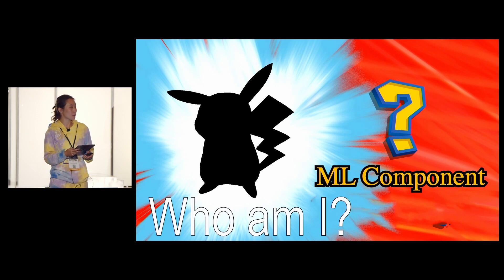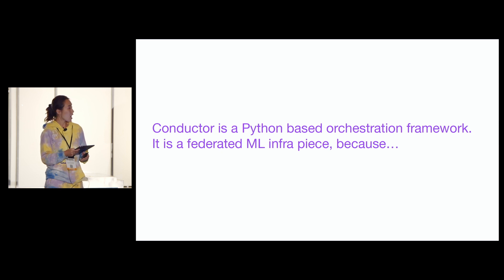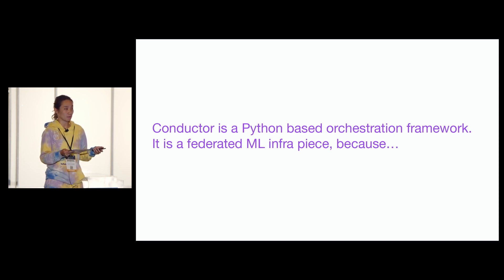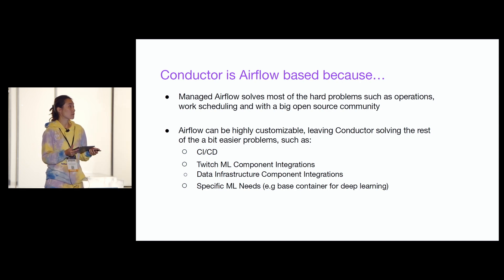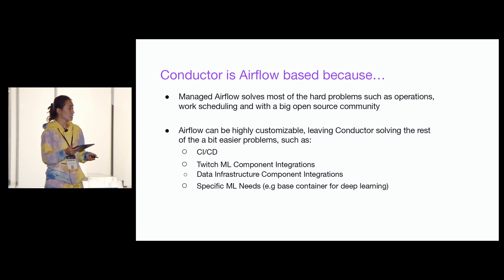That missing component is Conductor. There are two reasons why Conductor is a federated ML piece: no single ML infrastructure team owns a Conductor cluster to be shared — Conductor is more like a Python library or framework that every team builds in their own copy and maintains. And why Conductor is based on Airflow: Managed Airflow (MWAA) solves most hard problems like operations and workflow scheduling, and Airflow has a very big open-source community and is highly customizable. This leaves Conductor to solve the relatively easier problems: CICD, Twitch ML and data science project integrations, and specific ML needs like deep learning containers.